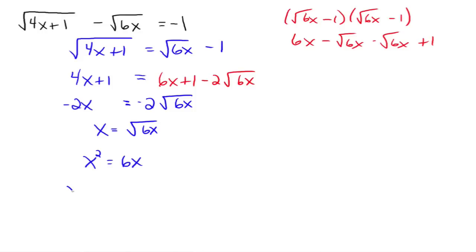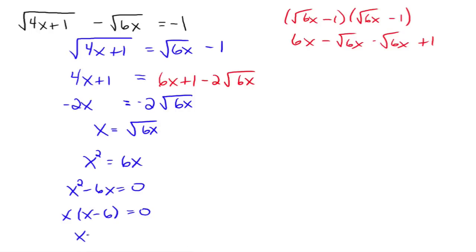Everything on one side, 0 to the other, and then solve this quadratic equation. In this case, you can just factor an x out, and you get x equals 0 and x equals 6.